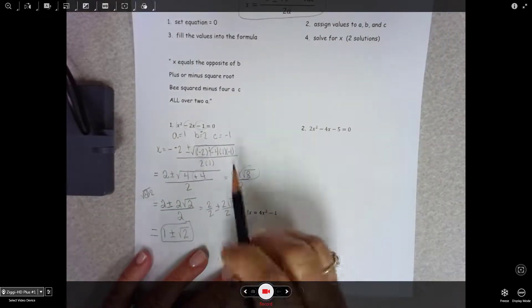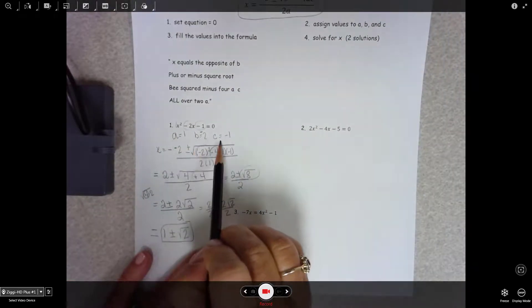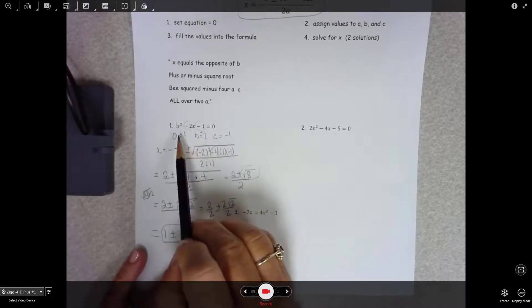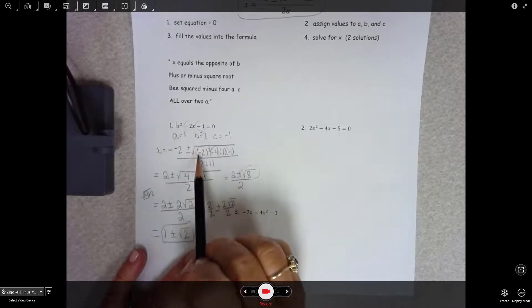So you can see we just chose our A, B, and C or assigned them actually and then filled it in.